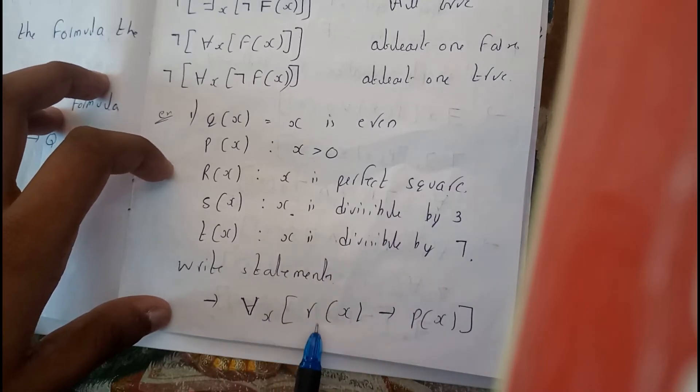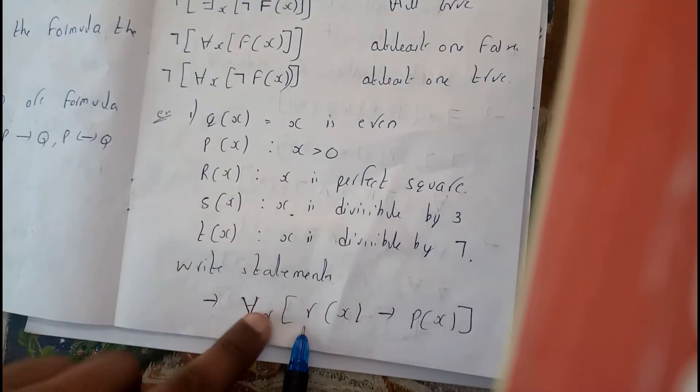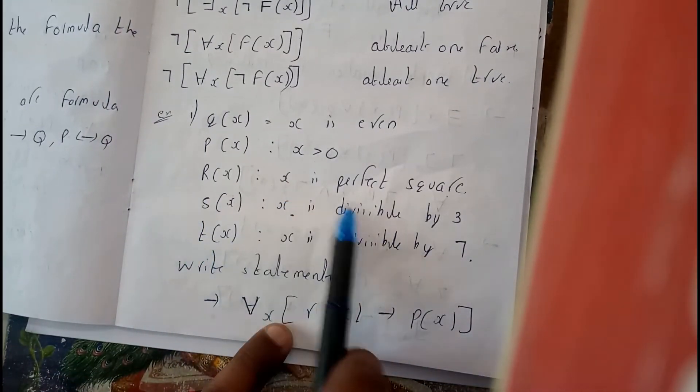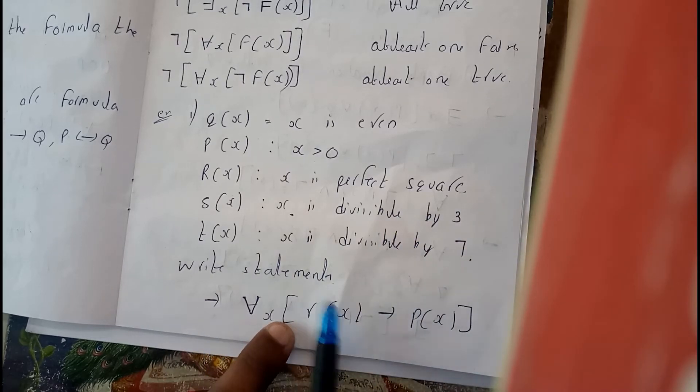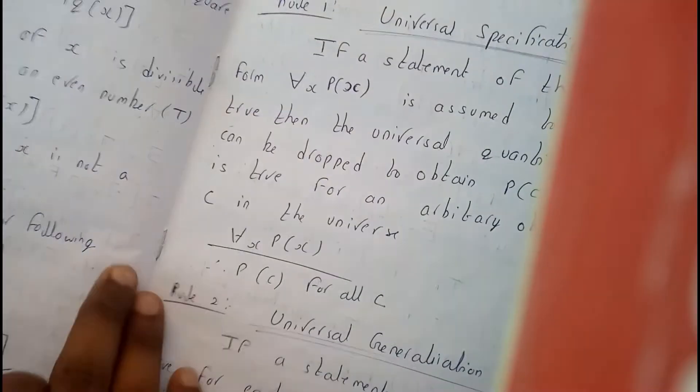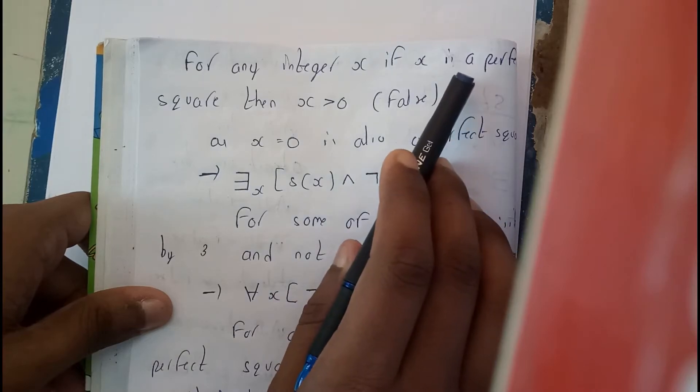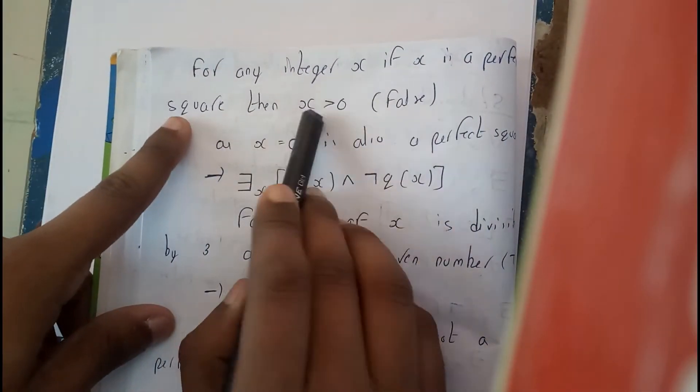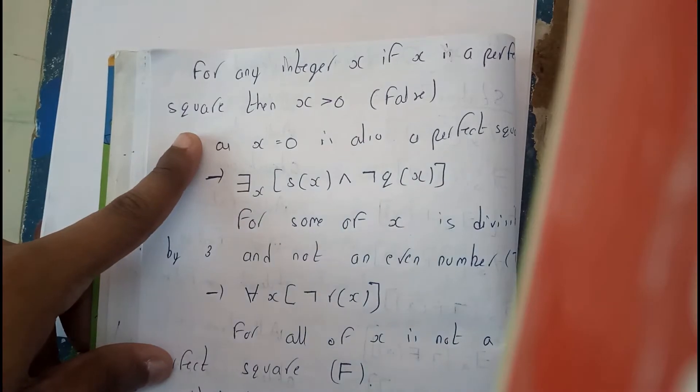for all, if r, r of x means, r means this. If x is a perfect square, then x is an even number. Sorry, x is a positive number or x greater than zero. That's it, right? For all integers, x is a perfect square, then x greater than zero. Is this true always? That's the main question.